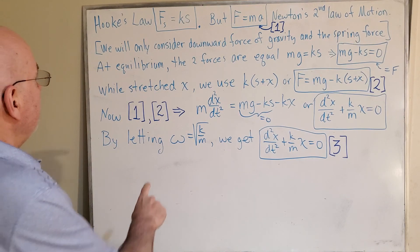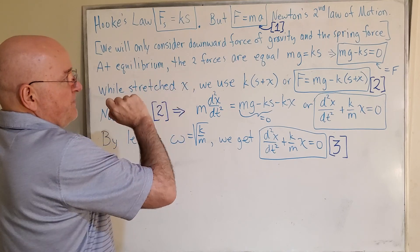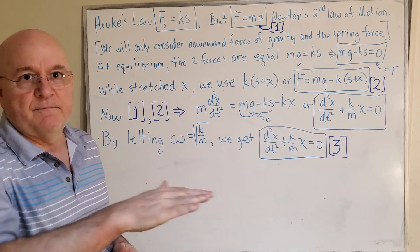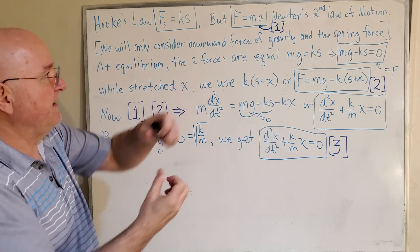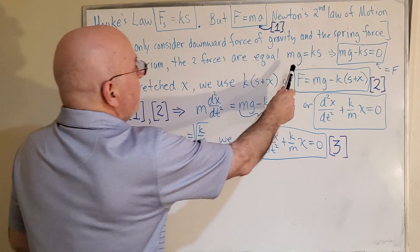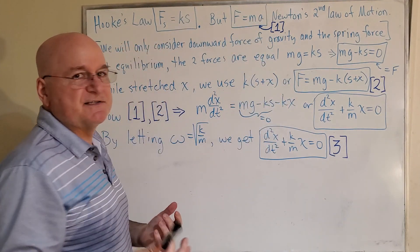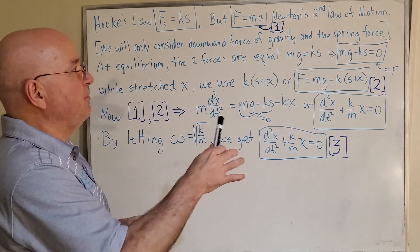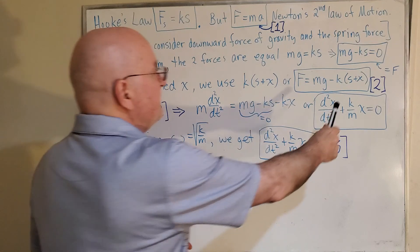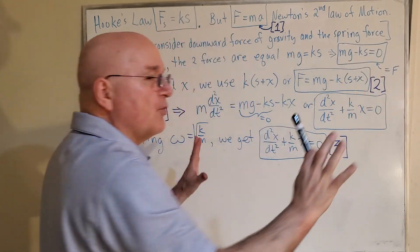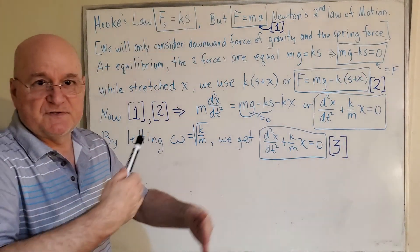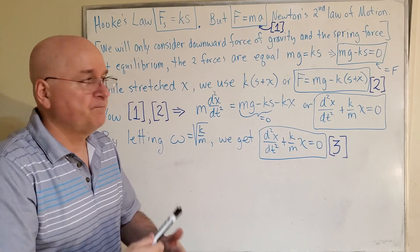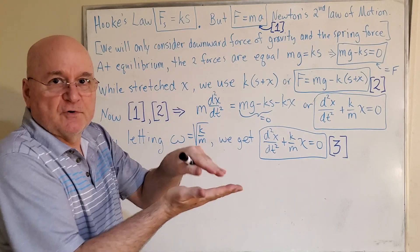Okay, so at equilibrium, the two forces are equal. When it's just sitting there in its equilibrium state, mass times gravity, mass times acceleration, and gravity being the acceleration in that case, is equal to KS. So you can come up with this simple equation. There's zero force. The sum of the forces is zero. Upward force, downward force, they're at equilibrium.